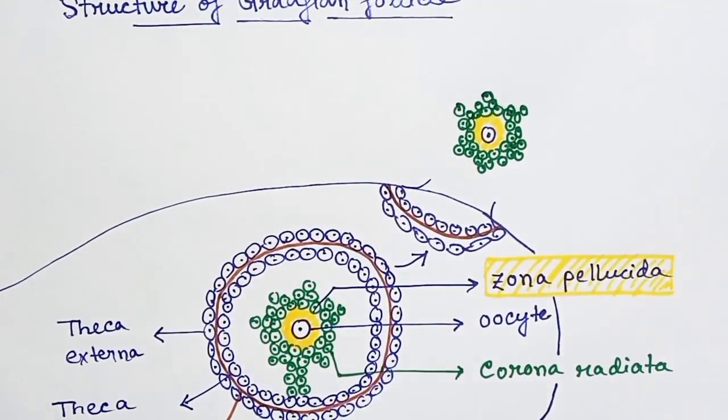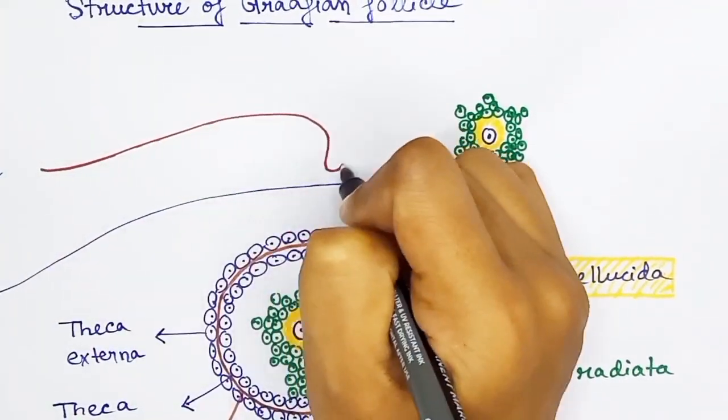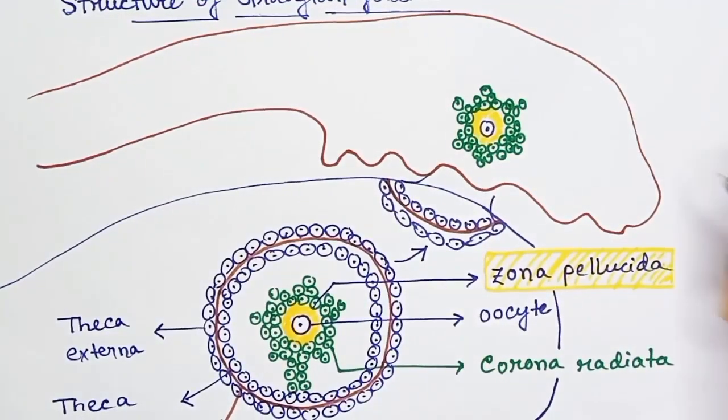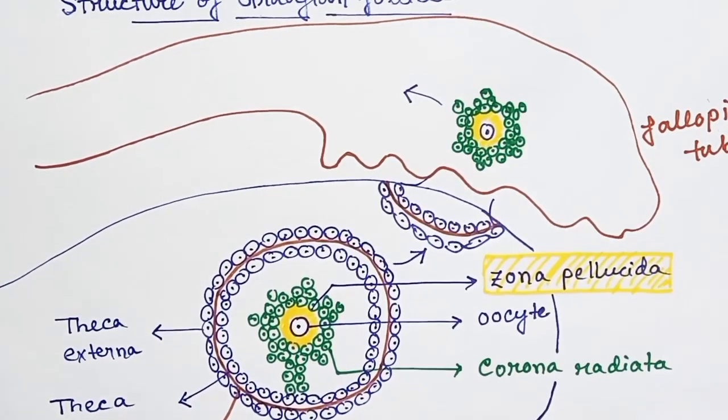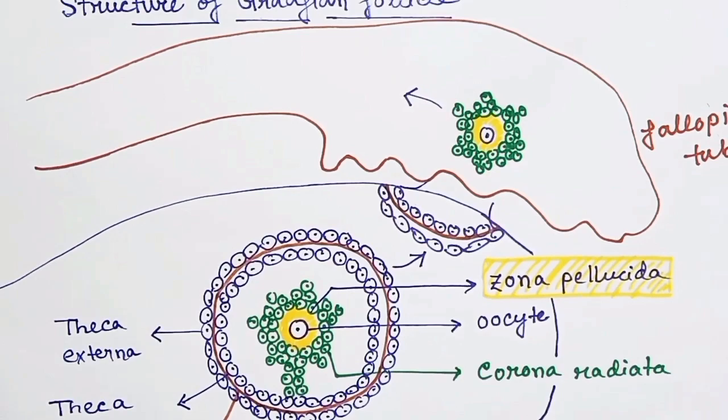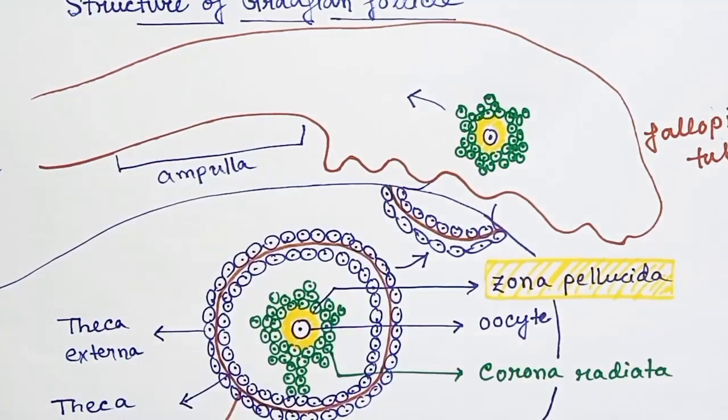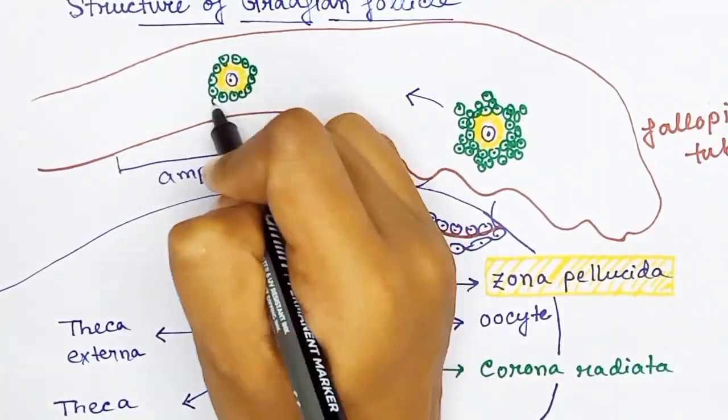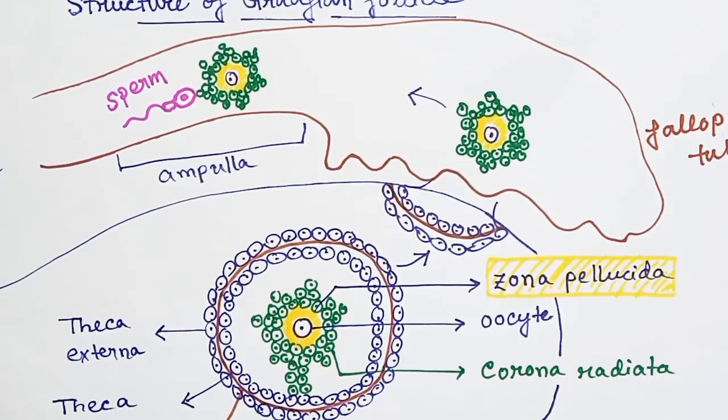After the ovulation, that is rupturing of the Graafian follicle, this oocyte along with zona pellucida and corona radiata goes to the fallopian tube. In the fallopian tube, it moves towards the uterus. In the region of ampulla of fallopian tube, it encounters the sperm where the fertilization occurs.